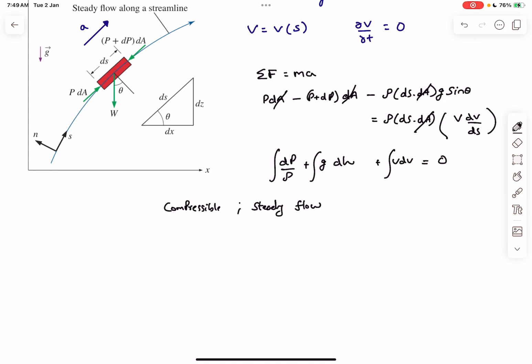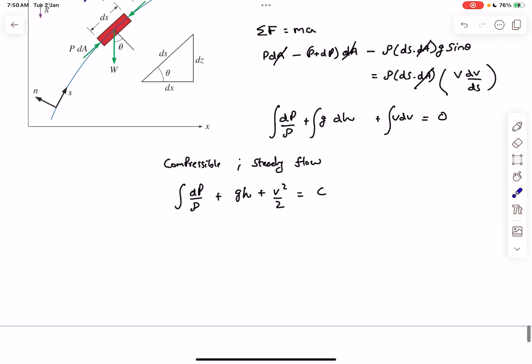I'm going to leave that integral as it is because we are not clear about the variation of density. Integral dh is simply h, and integral v·dv is v²/2, and this equals some constant C. Usually when we derive Bernoulli's theorem, ρ is invariant because it's a fluid, so we assume the density does not vary significantly.